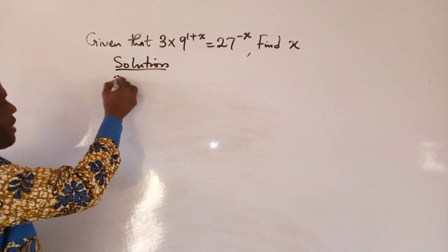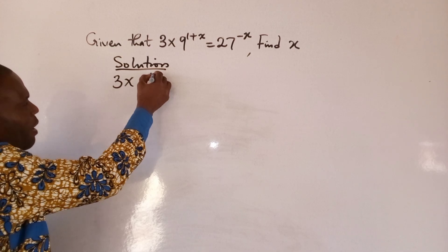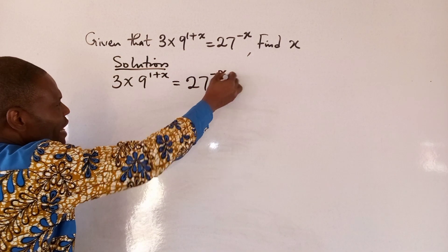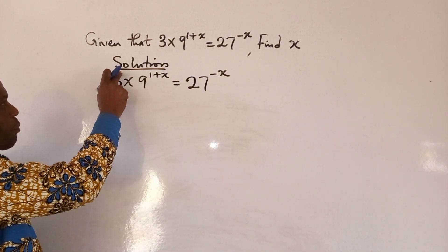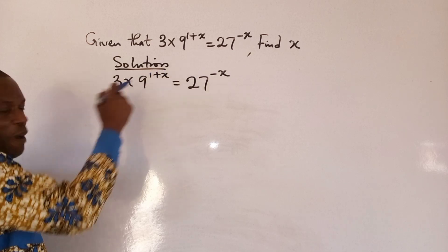So, if we have 3 times 9 raised to power 1 plus x equals to 27 raised to power minus x. Here, it's raised to power 1. You cannot multiply 3 and 9, no, because of this power.